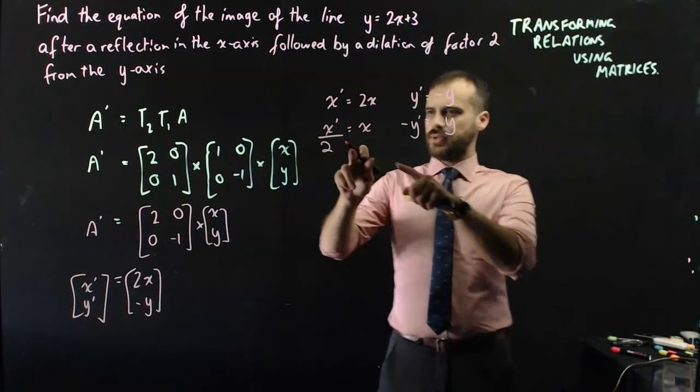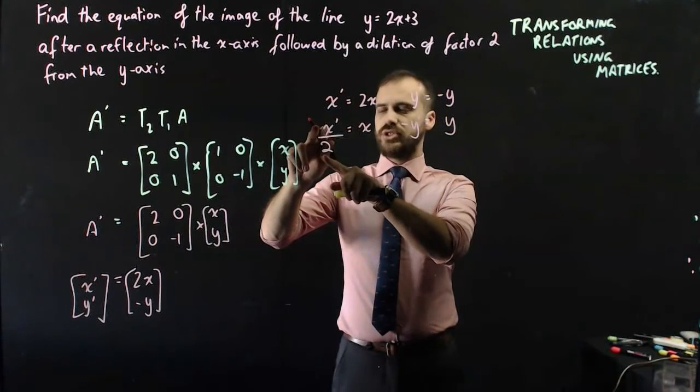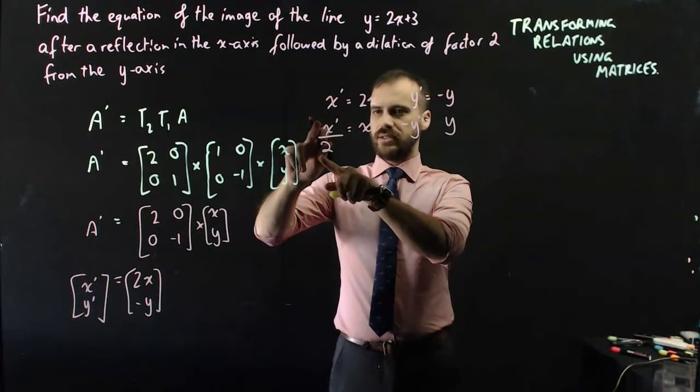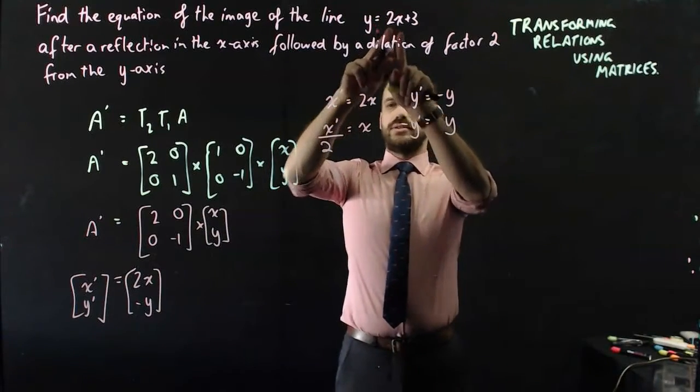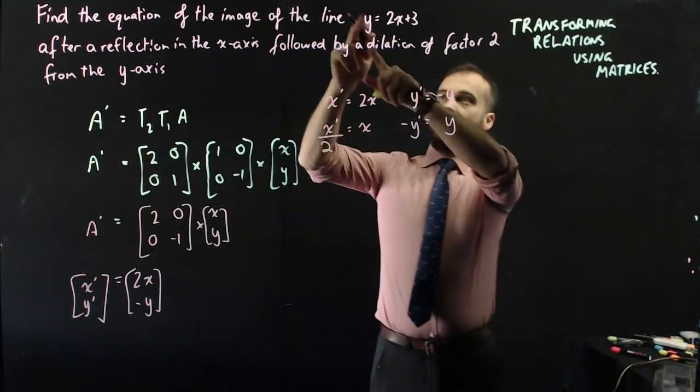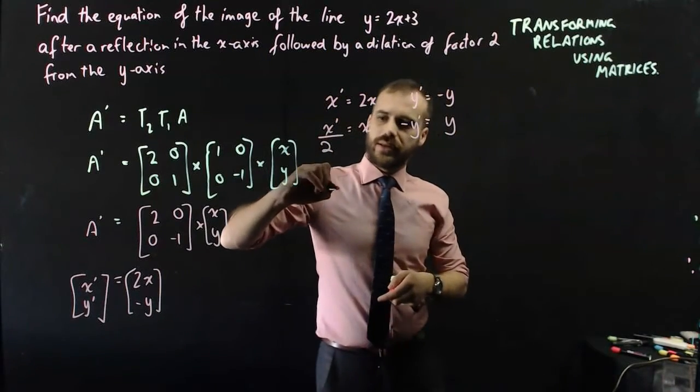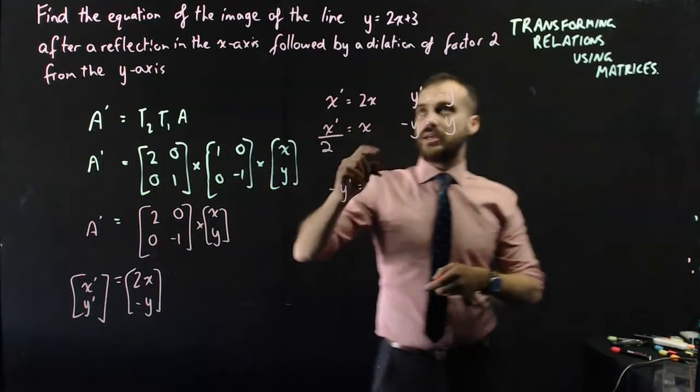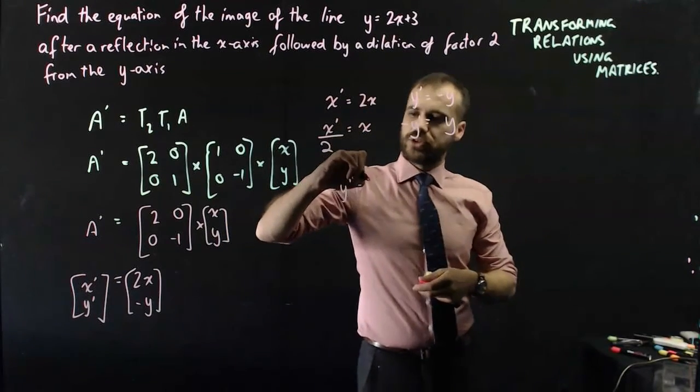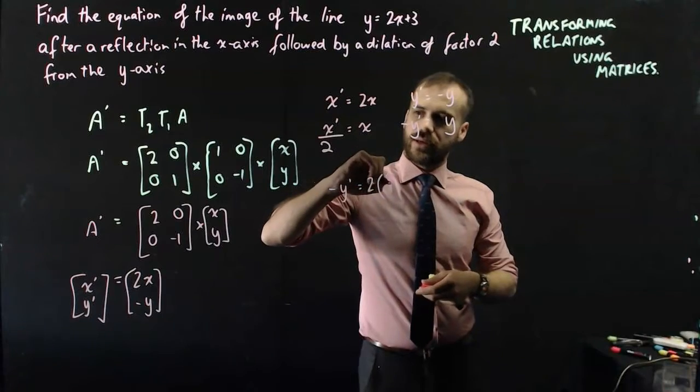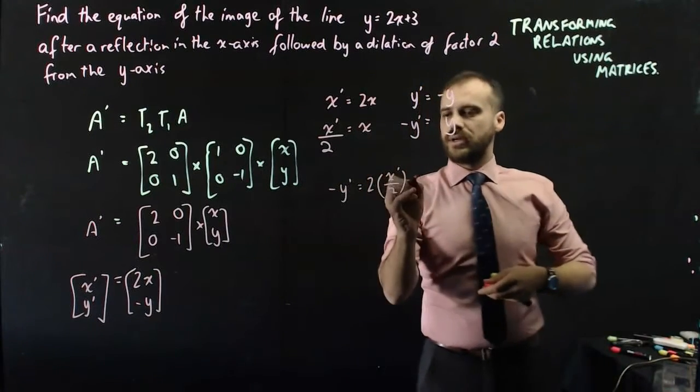Now I can now substitute that in for x and I can now substitute that in for y. So I can say that negative y dash equals 2 times x dash on 2 plus 3.